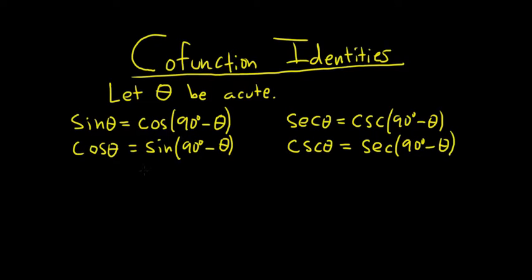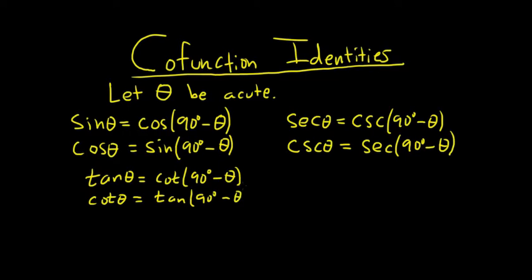The very last ones are tangent and cotangent. The tangent of theta is equal to the cotangent of 90 minus theta. And then the cotangent of theta, as you probably guessed, is the tangent of 90 degrees minus theta. Again, if theta is in radians, you would replace 90 degrees with pi over 2.